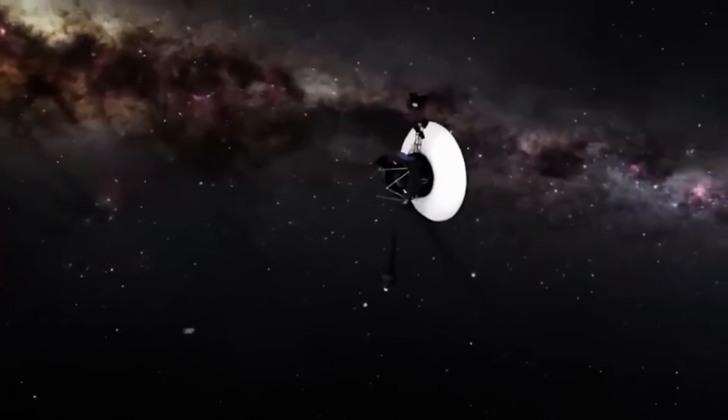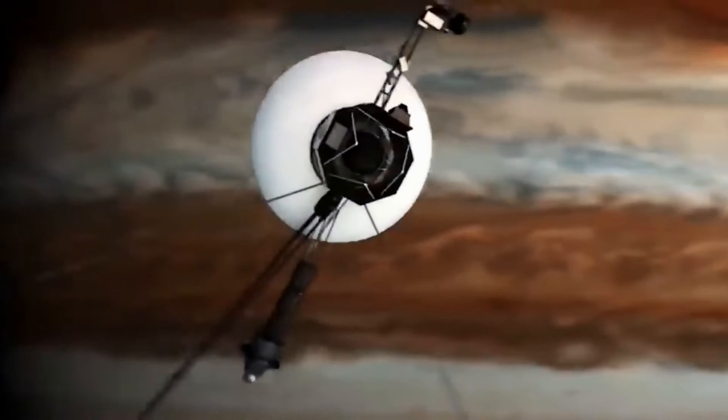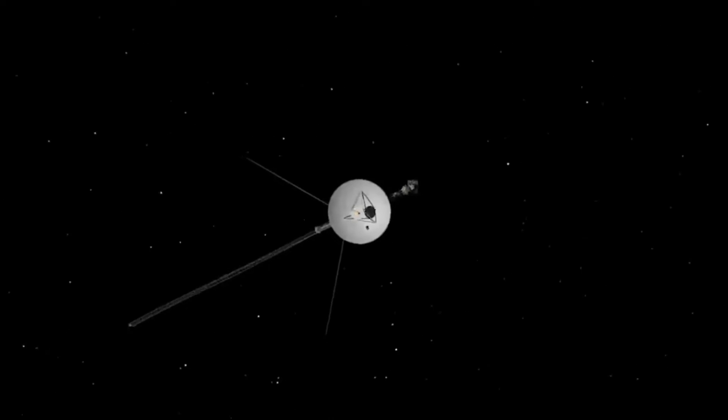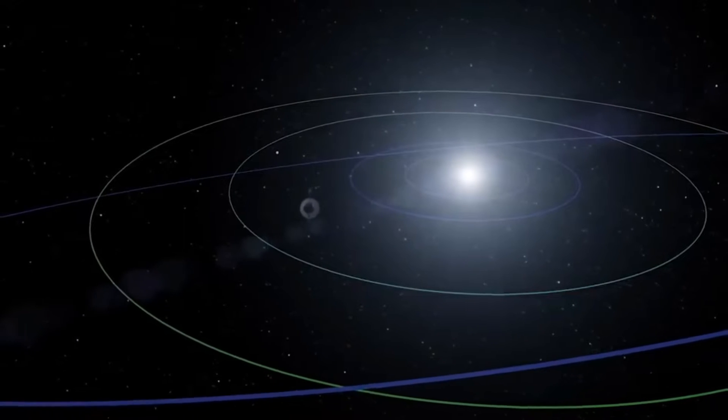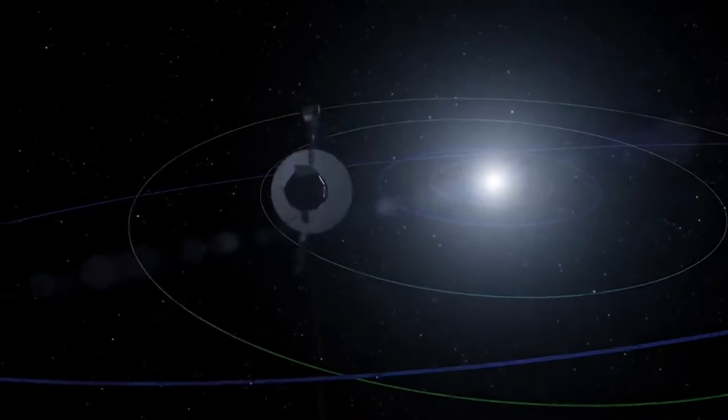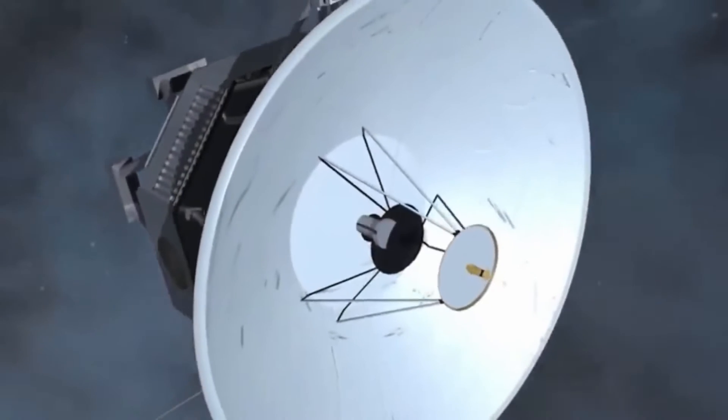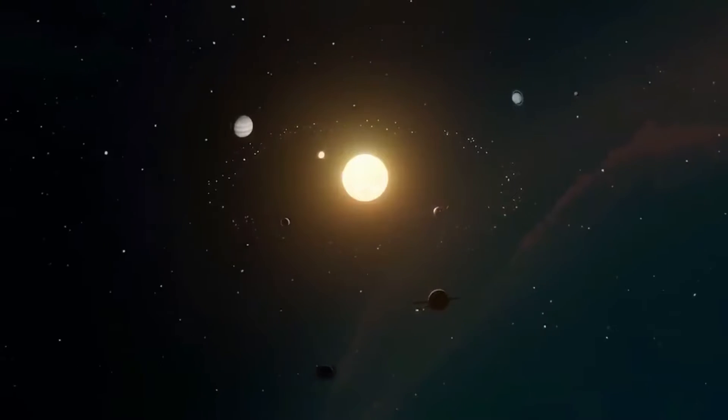Both Voyager's primary missions were to visit Jupiter and Saturn. Voyager 2 also visited Uranus and Neptune, whereas Voyager 1 prioritized Saturn's giant moon Titan, sending it on a new trajectory to the solar system's edge.